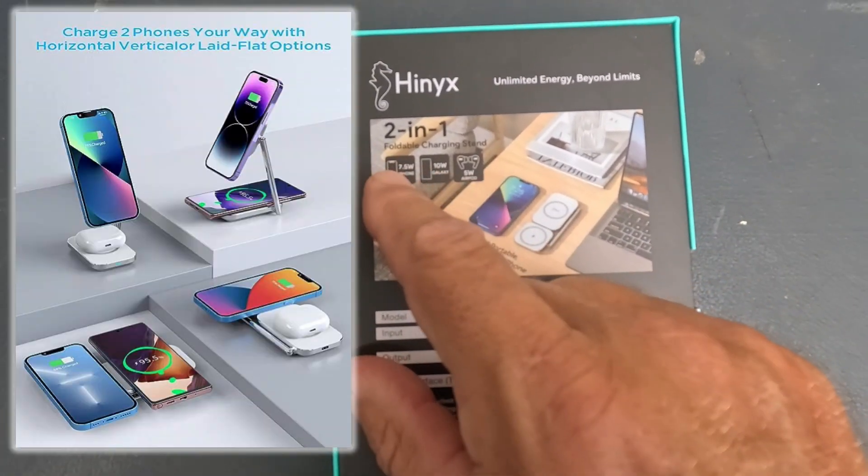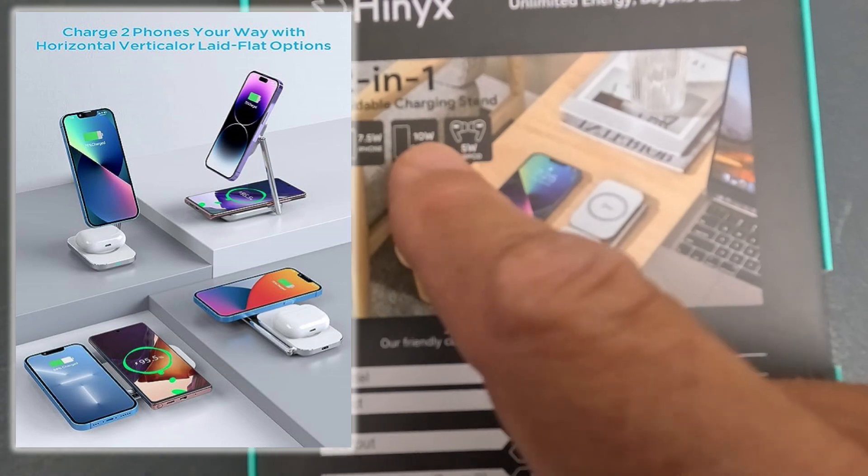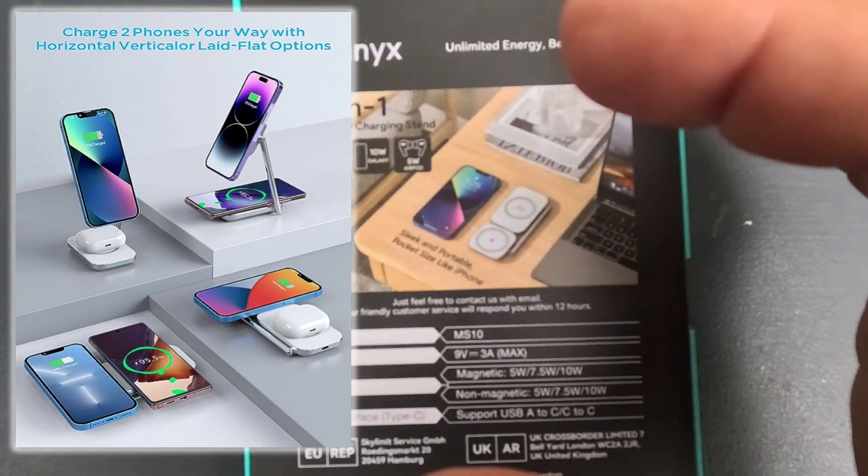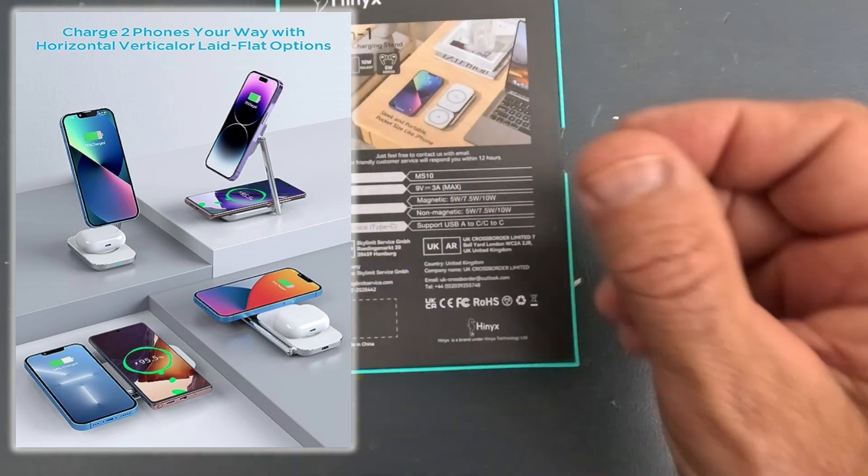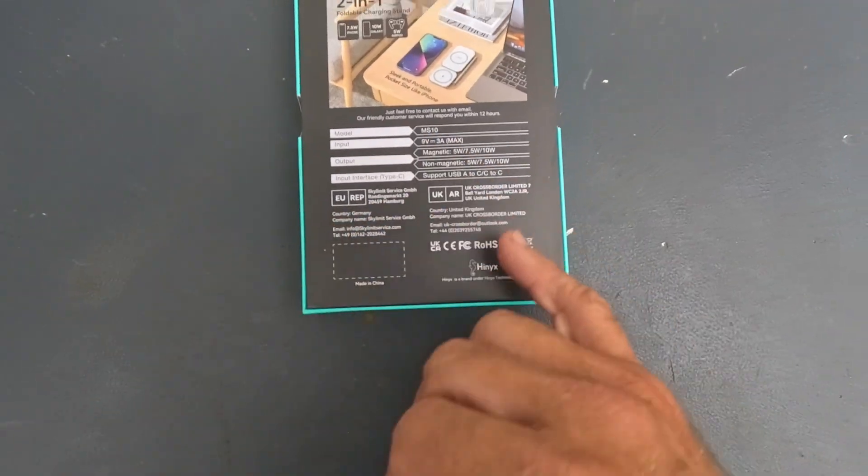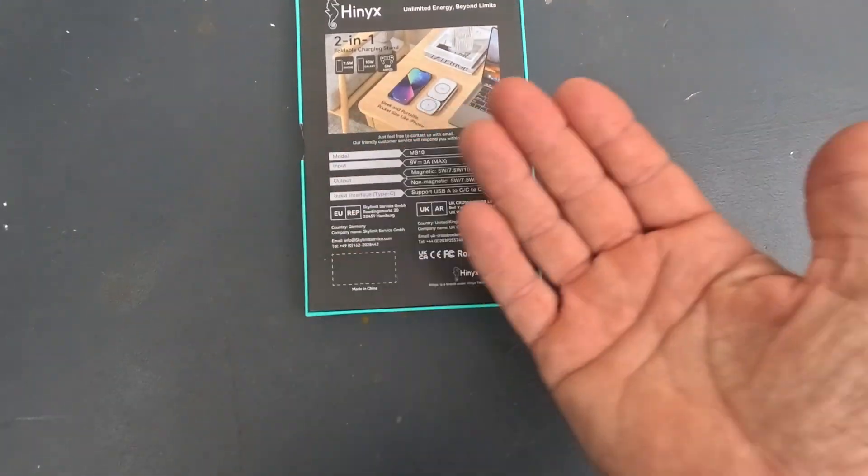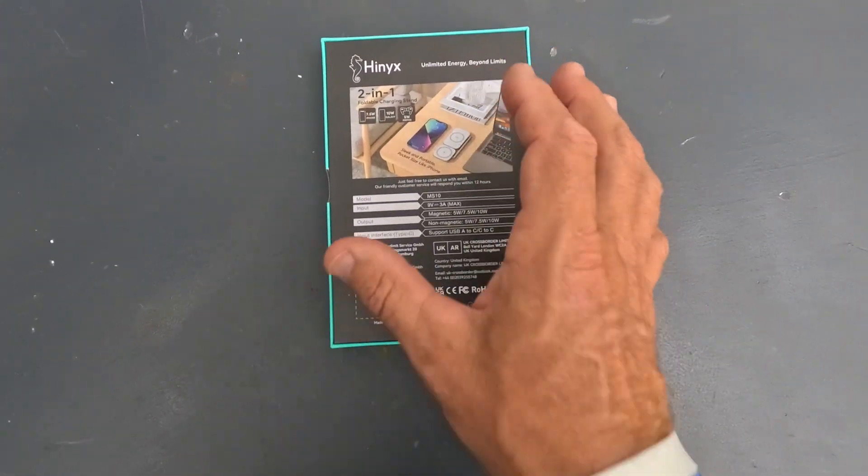So you can have your, it's 7.5 watt on an iPhone, it's 10 watts on a Galaxy Samsung and it's five watts on any type of an AirPod because those do have magnetic charging also. And this right here will basically support up to USB A to C to C. So it has several different types of support on it.